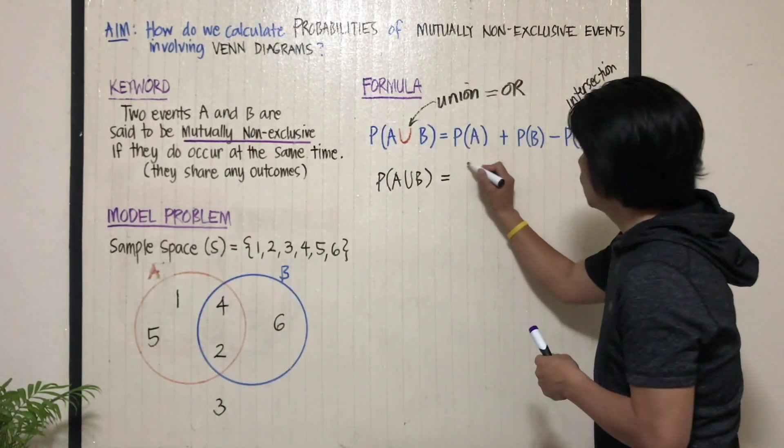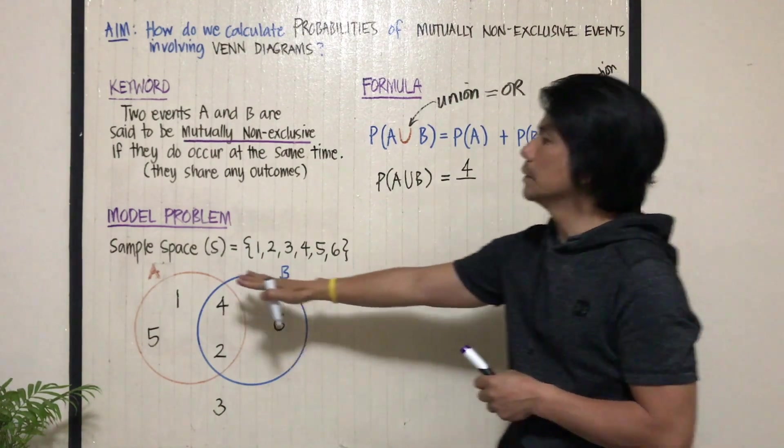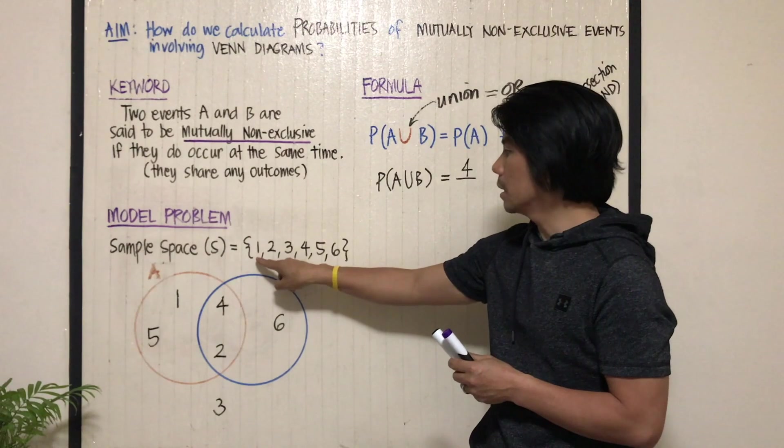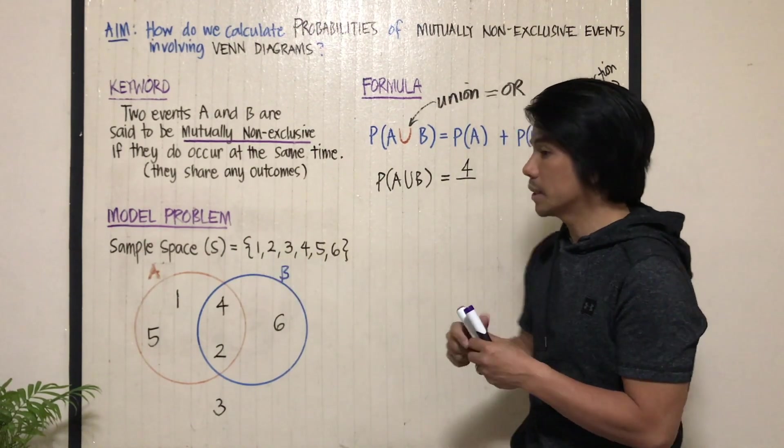Obviously, there are four numbers inside circle A. So that's four out of what? Out of the total number of space. How many numbers are in the space? From one to six, there are six.